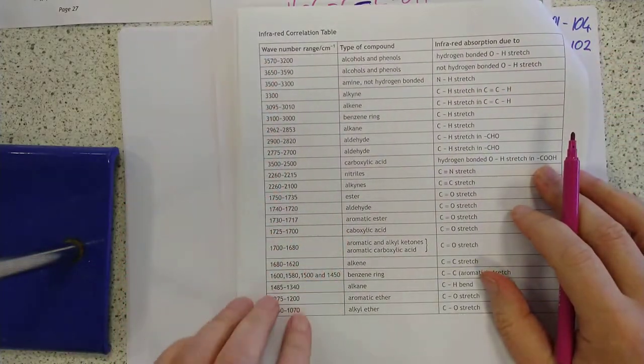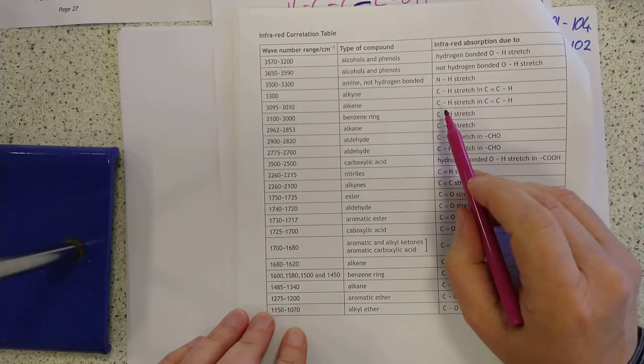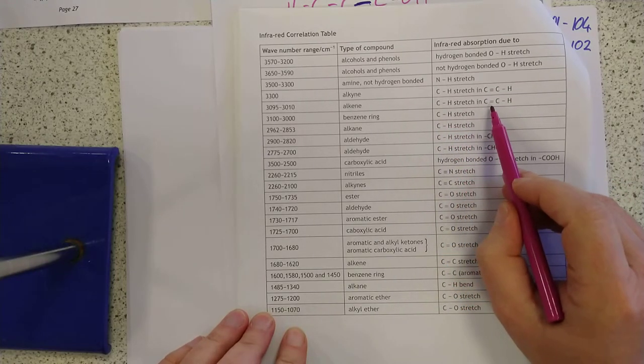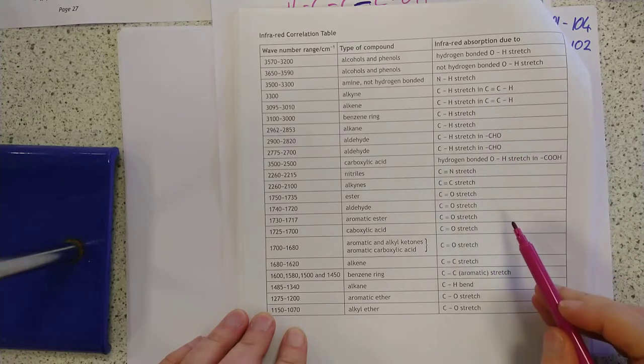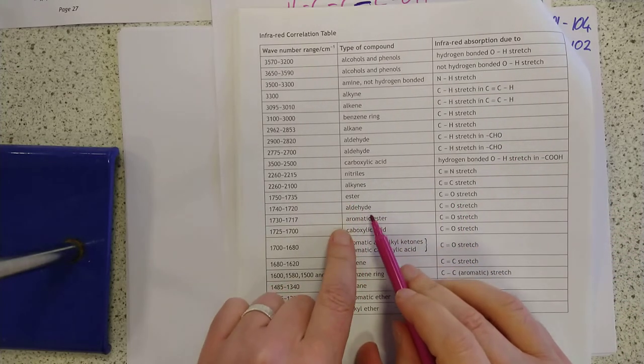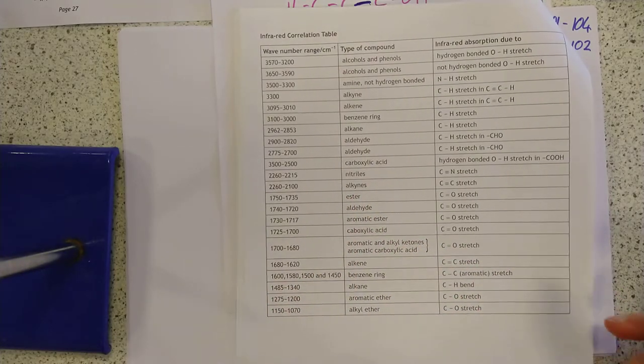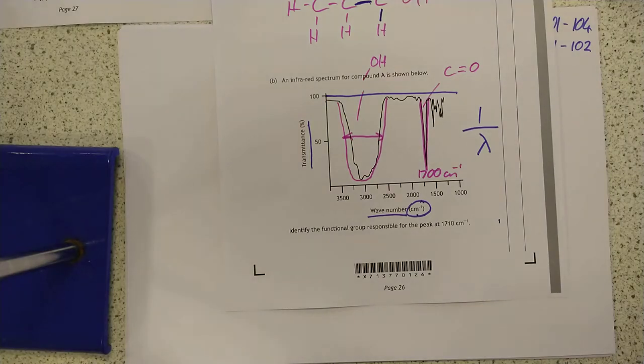And here are your wave numbers. Here are the individual bonds that are stretching. Sometimes they clarify them: a C-H stretch in a double bond or a C-H in a triple bond. Sometimes the carbonyl can have slightly different wave numbers depending on what type of molecule it's in. But as I said, those two are the favorites for them asking about.